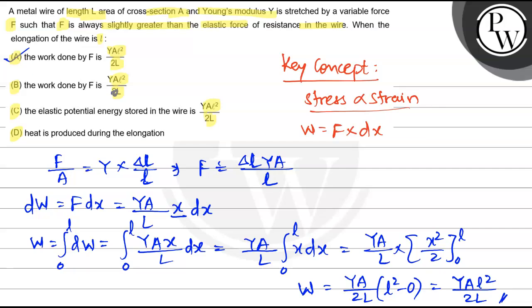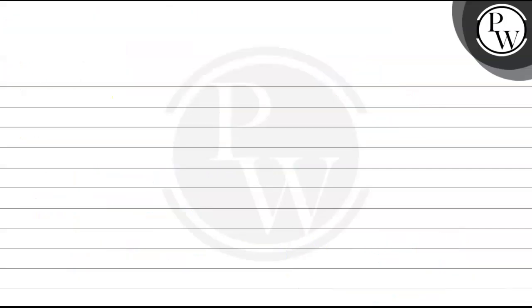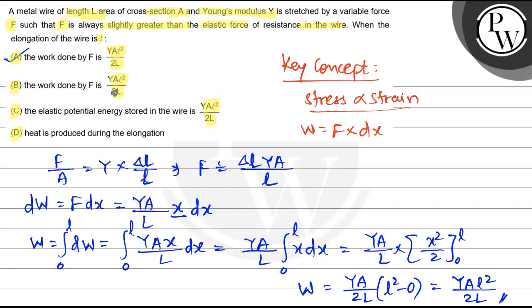Now for option C, the elastic potential energy stored in the wire. Elastic potential energy is the energy stored when work is done. The elastic potential energy is nothing but work done. So the same amount YAL²/2L applies. Option C is correct.